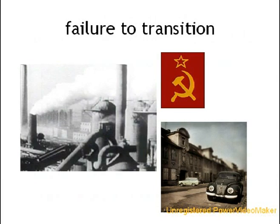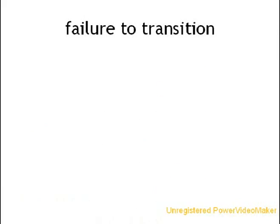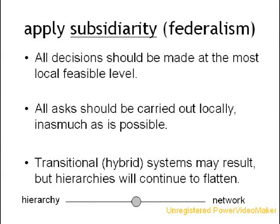Failures to make complexity transitions are well known. One obvious example is the former Soviet Union, whose command and control economy collapsed in the early 1990s. So how, at least in abstract terms, can systems make complexity transitions? Apply a principle of subsidiarity, which is similar to federalism. The principle of subsidiarity says all decisions should be made at the most local feasible level — in other words, make decisions close to the action. Keeping decision-making and execution closer to the action ensures individual nodes address the issues they're most familiar with. The effect of subsidiarity is that it flattens hierarchies, as greater decision-making power moves from higher nodes to lower nodes. Hierarchies transform into networks, and spontaneous orders can begin to emerge.